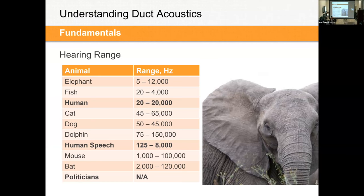Humans have a very wide hearing range — at birth, roughly 20 to 20,000 Hz. After years of exposure to sporting events and concerts, most adults can't hear much above 12,000–15,000 Hz. Some animals have extreme ranges: elephants hear very low frequencies due to large ear anatomy, while mice and bats can hear ultrasonic high frequencies.